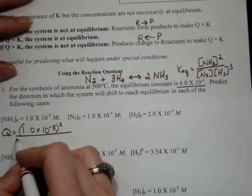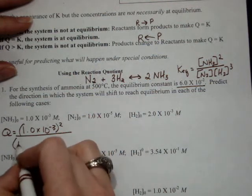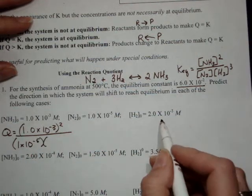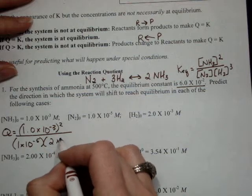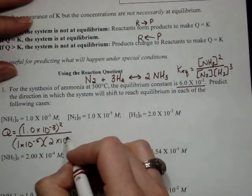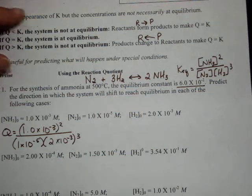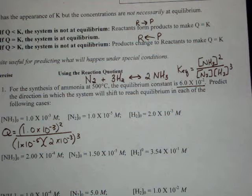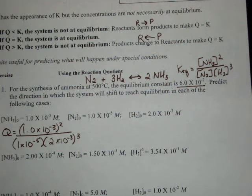over N2, 1 times 10 to the negative fifth, times H2, 2 times 10 to the negative third, and that is cubed. Then I'm going to use my handy dandy calculator and plug in the values. Make sure you watch out for all of your parentheses and various things that you'll need to be using.